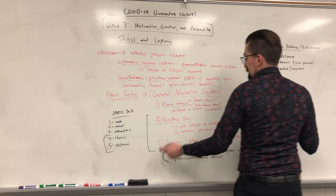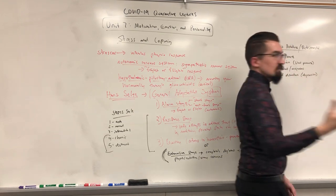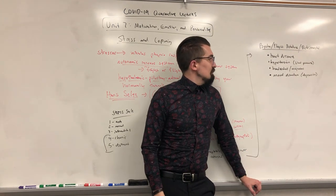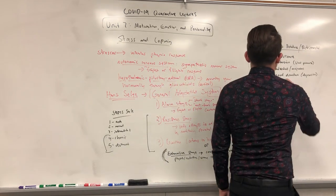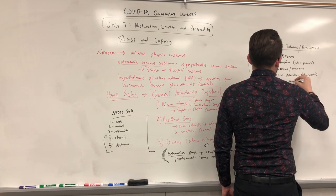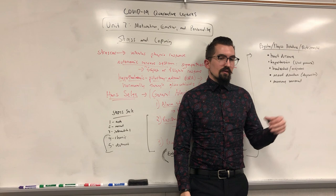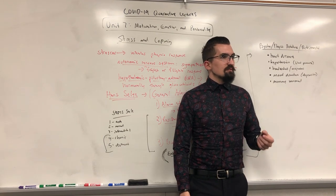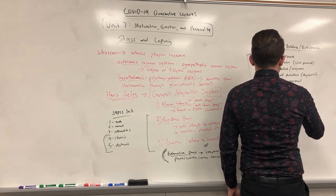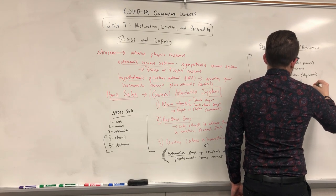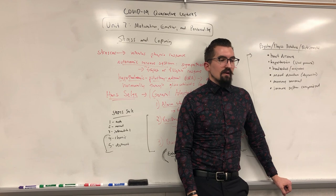Chronic stress also worsens memory — it actually deteriorates your hippocampus faster, making you more likely to lose the ability to make new memories more quickly than others. It damages your cell structure and makes you less able to repair cells properly, which is why you see faster aging. Your immune system becomes compromised, as it is incredibly complex and very dependent on energy and resources to function properly.